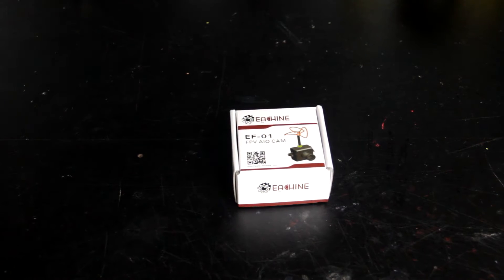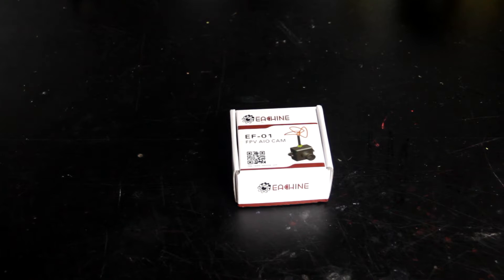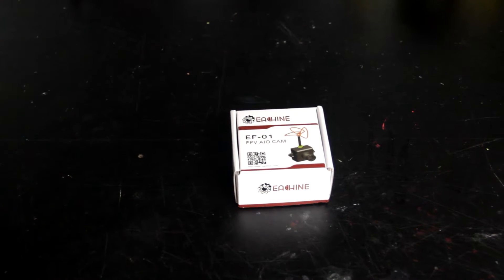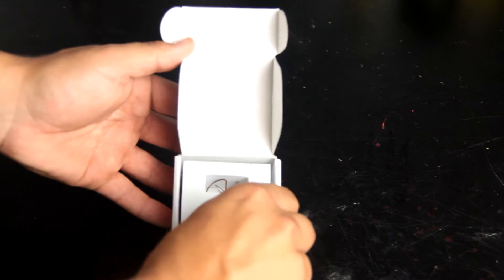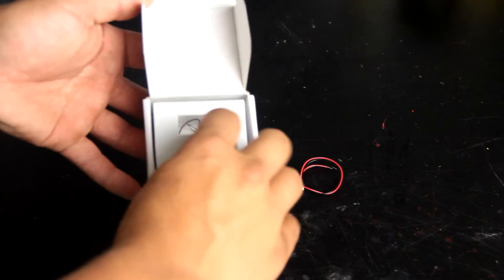Here we have the Eachine all-in-one FPV camera system for a micro quad. It's a camera with a video transmitter built into it, so super simple. You get your power cable and your camera.